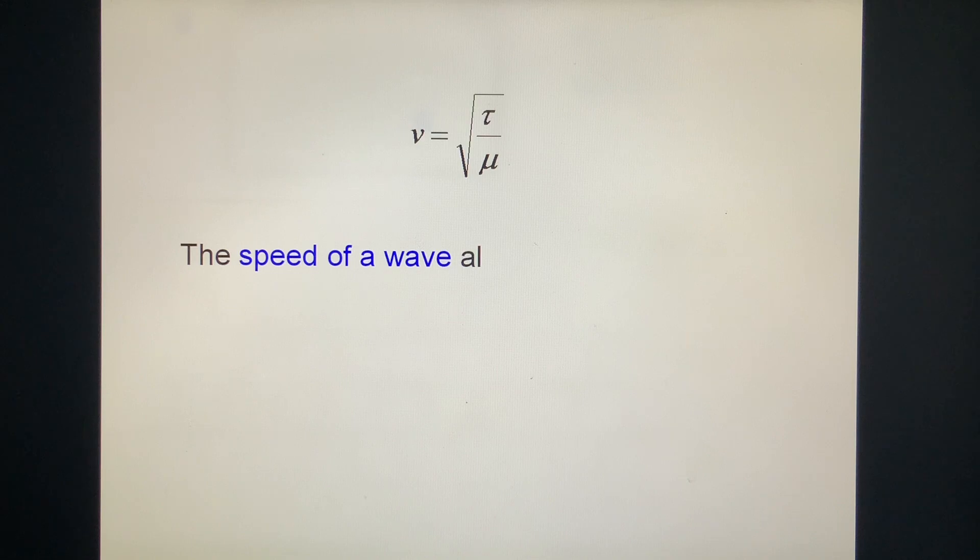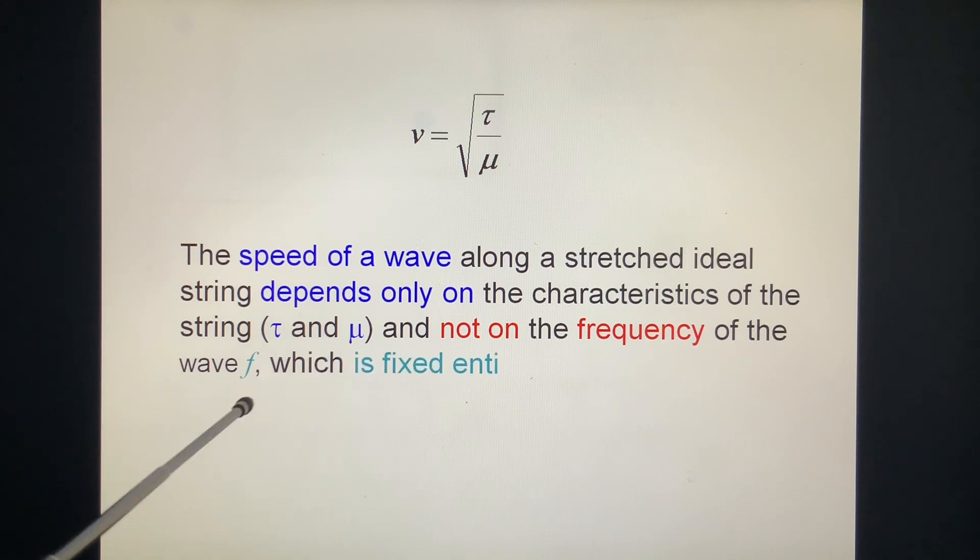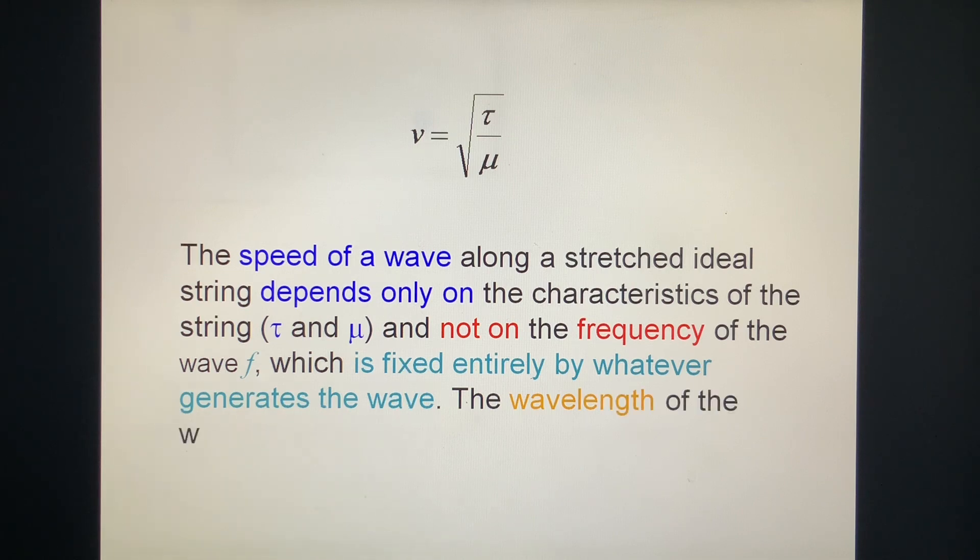The speed of the wave along the stretched ideal string depends only on the characteristics of the string, τ and μ, and not on the frequency of the wave f, which is fixed entirely by whatever generates the wave. The wavelength of the wave along the string is fixed by λ = V/f. The f is decided by the source, V decided by the medium, and then we get the λ.